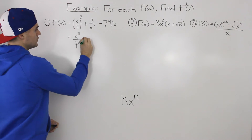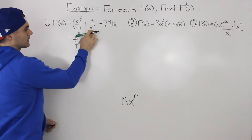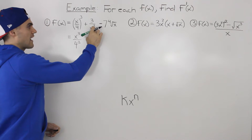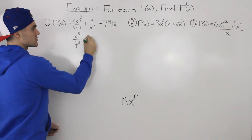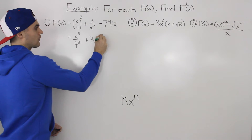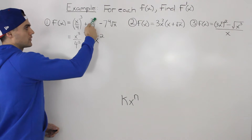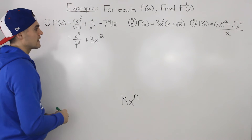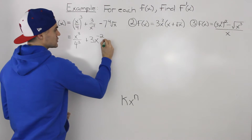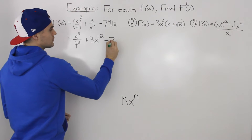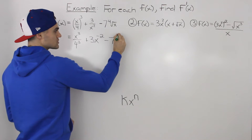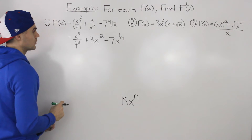Whenever you have a variable in the denominator, you want to bring it up to the numerator. So we can rewrite 3/x² as 3x to the power of negative 2 — when you bring that exponent up to the numerator, it becomes negative. You may need to review your exponent laws. The 7 stays as is, and the 4th root of x becomes x to the power of 1/4.